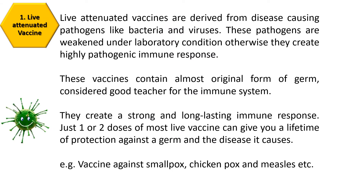Live attenuated vaccines are derived from disease-causing pathogens like bacteria and viruses. These pathogens are weakened under laboratory conditions, otherwise they would create a highly pathogenic immune response. These vaccines contain almost the original form of germs, but with reduced virulence. They are considered good teachers for the immune system, creating a strong and long-lasting immune response. Just one or two doses can give a lifetime of protection. Examples include vaccines against smallpox, chickenpox, and measles.